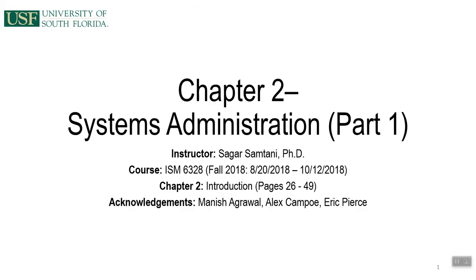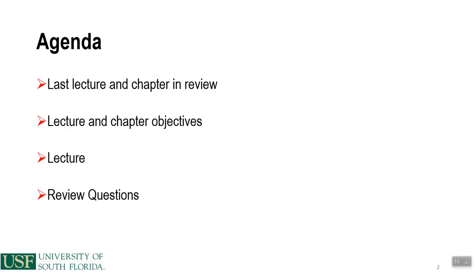Welcome to the second lecture for chapter 2, Systems Administration Part 1. You can find this lecture on pages 26 through 49 of your textbook. Today's agenda: first, we'll review the last lecture; second, we'll go over the lecture and chapter objectives; third, I'll get into the lecture itself; and fourth, I'll summarize review questions critical for the quiz associated with this chapter.